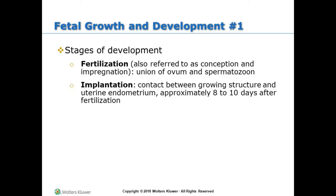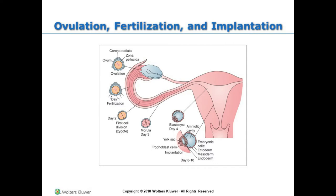Fertilization, also referred to as conception and impregnation, is the union of the ovum and spermatozoan. Implantation is contact between the growing structure and the uterine endometrium, occurring approximately 8 to 10 days after fertilization.